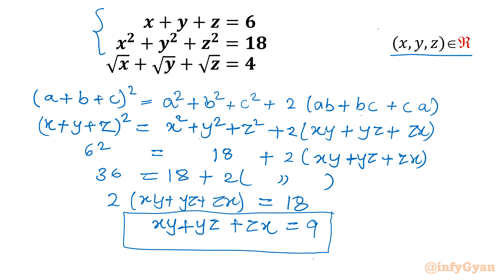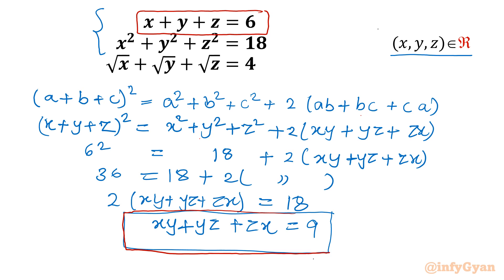Now if we consider a cubic equation whose roots are x, y, z, we have the sum of roots equal to 6, and the sum of roots taken two at a time equal to 9. The only thing missing is the product of roots xyz. So my target is to find out the product of the three roots.